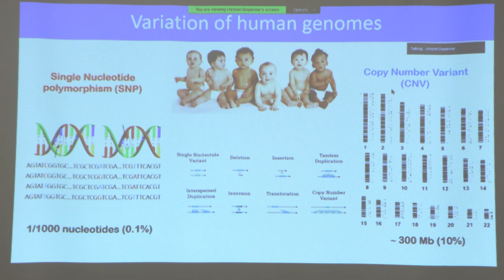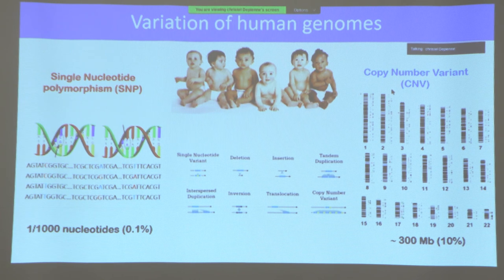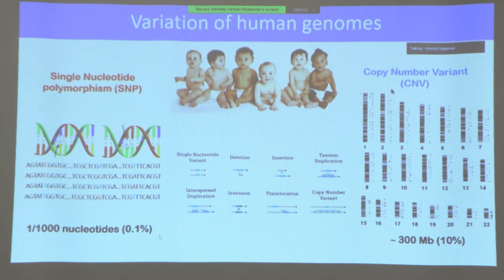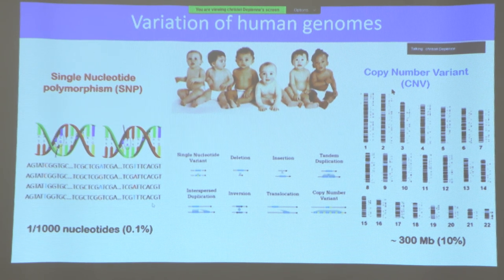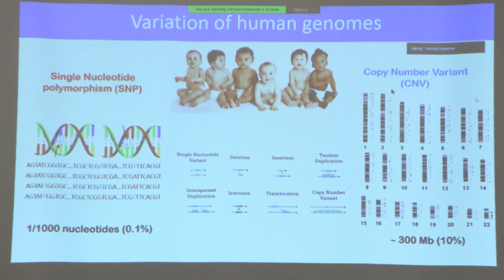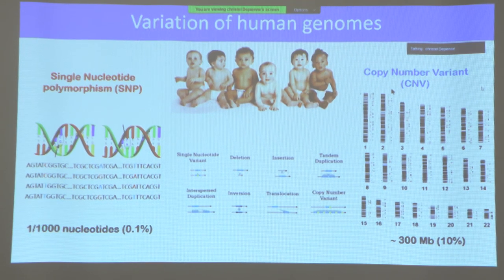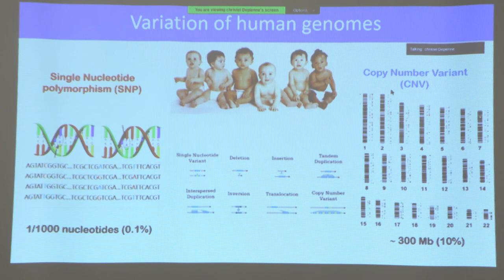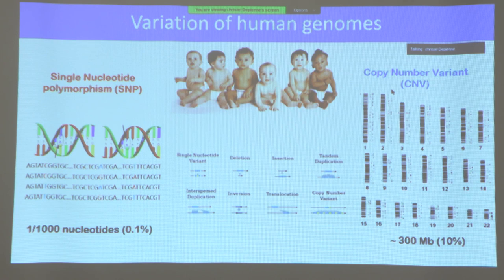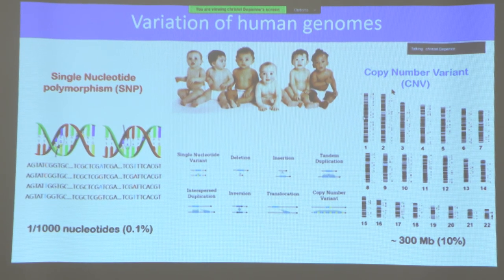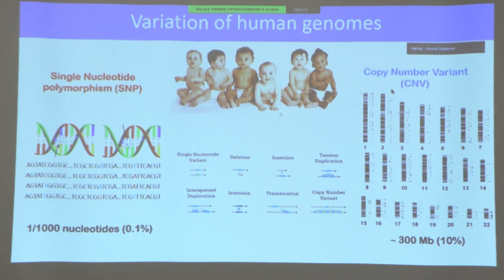In genetics, there are two main types of variation. One is called single nucleotide polymorphism, or SNPs — a change of one of the four letters replaced by another, happening about 1 in every 1,000 base pairs, representing 0.1% of our genome. On the other hand, there are bigger changes called copy number variants — parts of chromosomes that are either duplicated or lost. As you can see on this slide, each step is a copy number variant. All types of changes that are compatible with life can be found in humans.